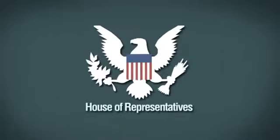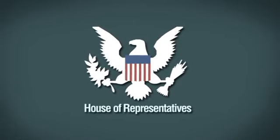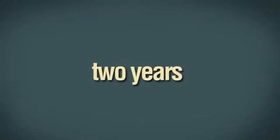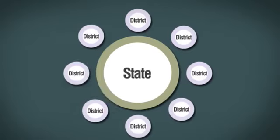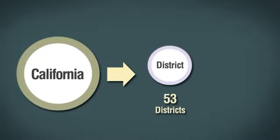The House of Representatives in the US Congress is designed to give a voice to the people of every local voting region of America. Members of the House of Representatives stand for re-election every two years. Each state is split into districts, and each district votes for one representative. The number of districts depends on the population of each state. For example, California, the most populous state, is split into 53 districts.